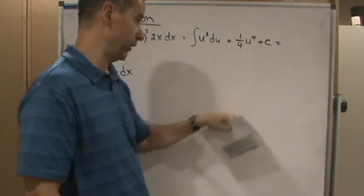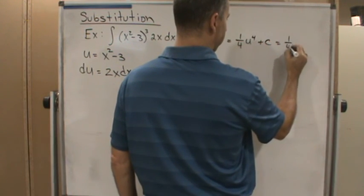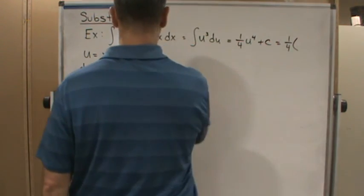So in that case it's going to be one-fourth times (x squared minus three)